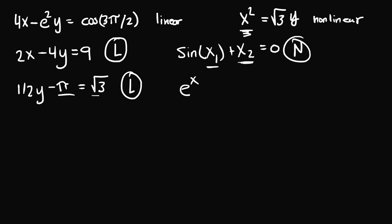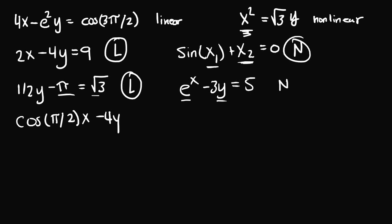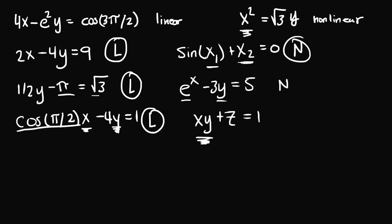What if we had e to the x minus 3y is equal to 5? Our variables are x and y. y is okay, but x is in the exponent of the constant e, so this makes it nonlinear. What if we had cosine(π/2) times x minus 4y is equal to 1? Cosine of π/2 is just some constant value, and our unknown variables x and y are only raised to the first power and not involved in any logarithmic, exponential, or trigonometric function, so this equation is linear. Finally, x times y plus z is equal to 1 — here we have three unknowns x, y, and z, but two of our variables are multiplied with one another, so this makes the equation nonlinear.